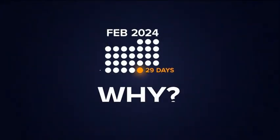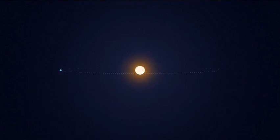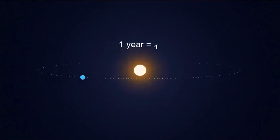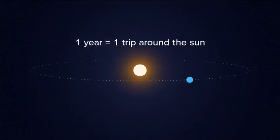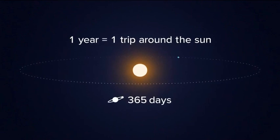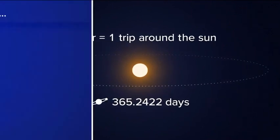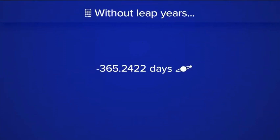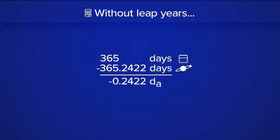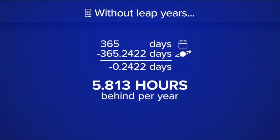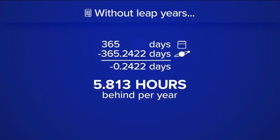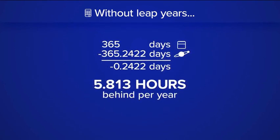2024 is a leap year and the question arises: why do we have leap years? The Earth takes one year to revolve around the sun — not exactly. It actually takes 365.2422 days. When you subtract and find the difference, it's not zero. We're behind about 5.8 hours each year. While this is a small number, over decades and centuries this would have an impact on our calendar.